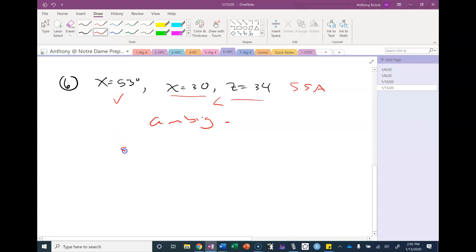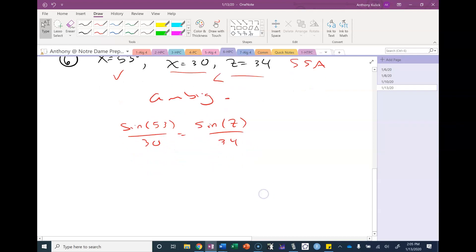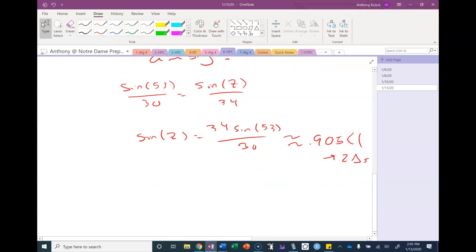To determine how many triangles I have in the ambiguous case, I'm going to use the law of sines and solve for sine z. When I cross-multiply and divide, I get this. And when I type that into my calculator, I get 0.9. Since that is less than one, I have two triangles.